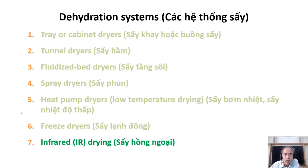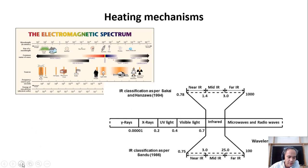Now we go to the last technology of drying that we discussed together: infrared drying. This is the range of radiation in life — a large range of radiation called the electromagnetic spectrum.